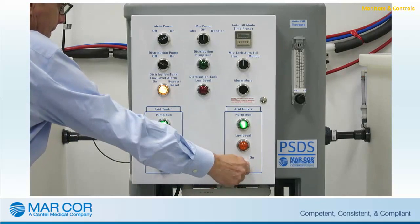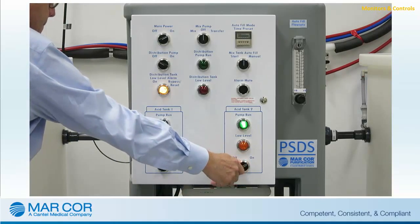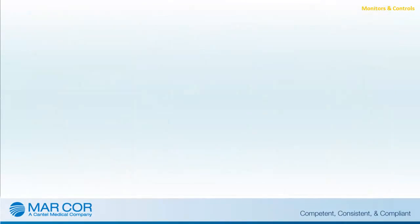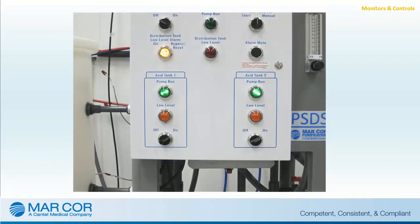Up to three acids can be operated. The amber acid tank low-level light illuminates when a low-level condition in the associated acid tank occurs.